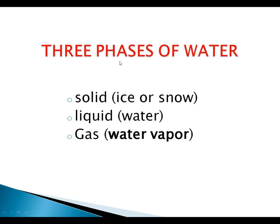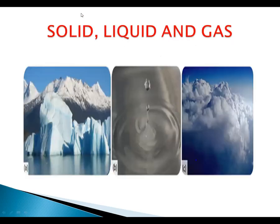Let's see the three phases of water. Solid — for example, ice or snow; also glaciers and ice in frozen form. Liquid water. And gas — for example, water vapor. Here you can see some figures illustrating these states. Water vapor is also found in the atmosphere.